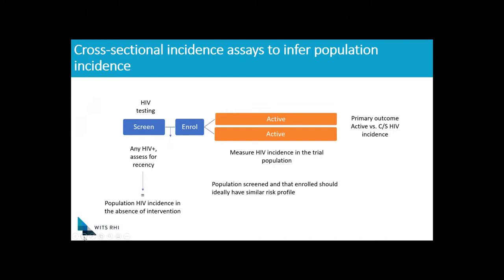The idea behind cross-sectional incidence assays to infer population incidence is that we would still conduct a trial where we would screen people for eligibility, enroll those that were eligible, and randomize them to one or more active products. But in addition, anyone who screened and was HIV-positive, we would assess to see whether they have recent infection. At the end of the trial, we would compare the outcome of incidence in the active product groups with the incidence estimated in those that were recently infected. This is potentially how trials will be done with an external control going forward.